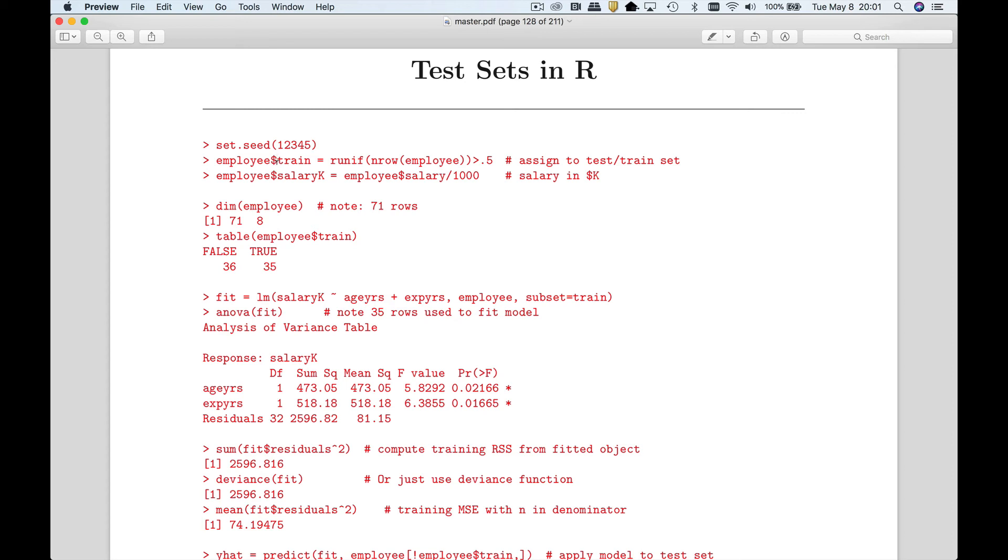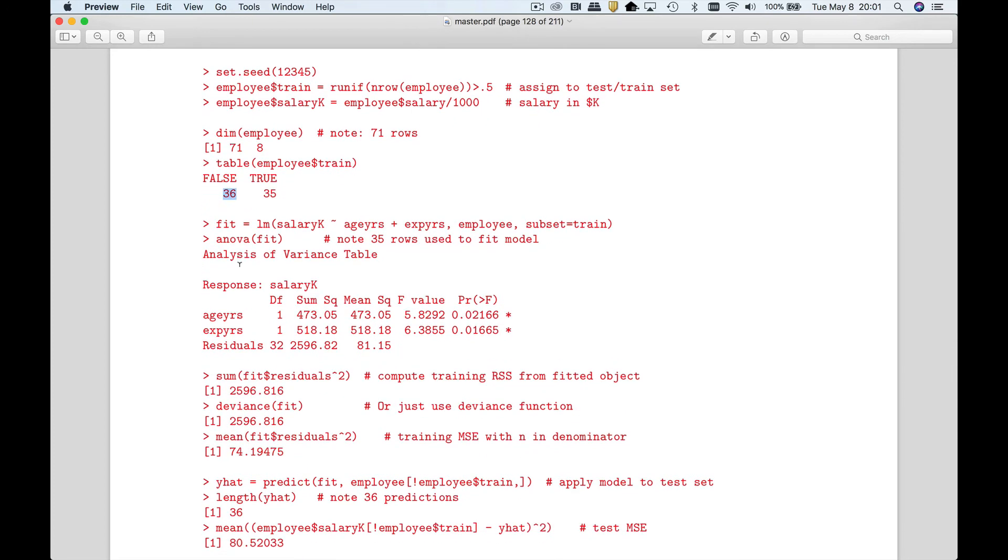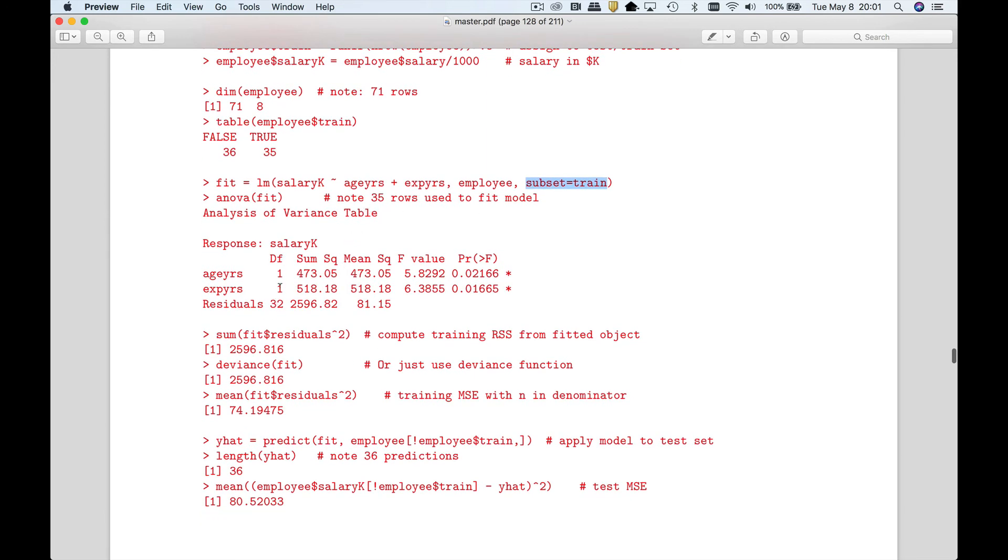What I'm going to do - remember what a test set is. I have to randomly assign the cases to a test and training set. This line is going to assign every case to either the test or the training set. This data set had 71 cases. If I do a table in this new variable I just defined, you're going to see by chance 35 of those go into my training set, 36 go into the test set. Now remember, I'm supposed to lock the test set away in a safe and only use the training set. When I fit a regression model, I'm going to specify the subset command saying I only want to use the training set. If you run an ANOVA, you're going to see there are only 35 cases.